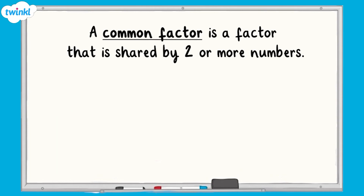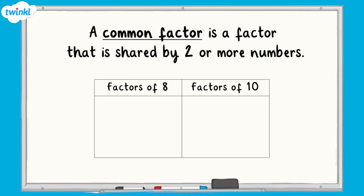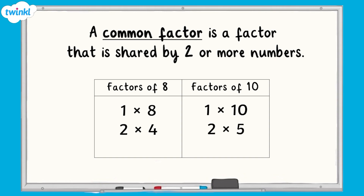A common factor is a factor that is shared by two or more numbers. For example, the factors of 8 are 1, 2, 4 and 8, and the factors of 10 are 1, 2, 5 and 10. Which means that the common factors of both 8 and 10 are 1 and 2.